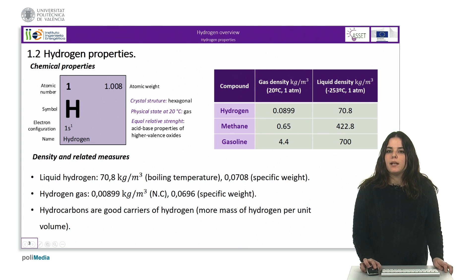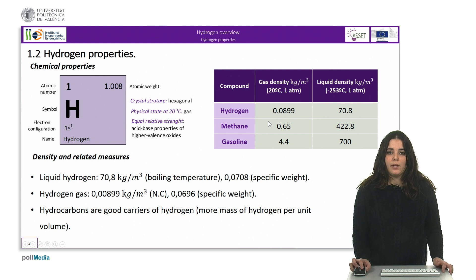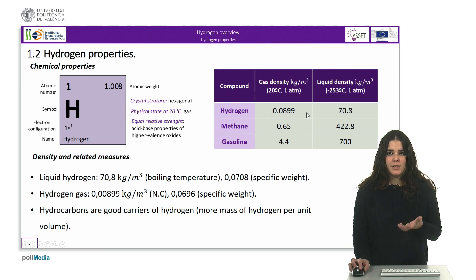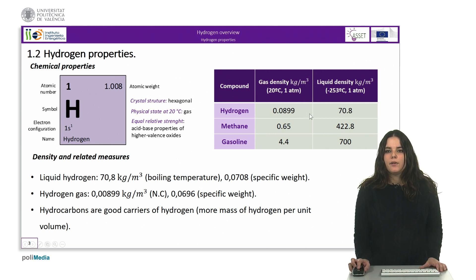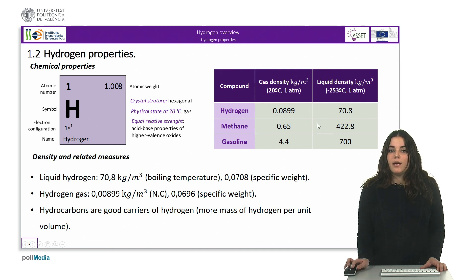Since hydrogen is the chemical element with the lowest atomic weight, its density is very low in both liquid and gaseous state. At the boiling temperature, the density of liquid hydrogen is 17.8 kilograms per cubic meter, whereas in normal conditions and in gaseous state, its density is 0.0899 kilograms per cubic meter. The table here compares the density of hydrogen with other conventional fuels, where we can appreciate how light hydrogen is.